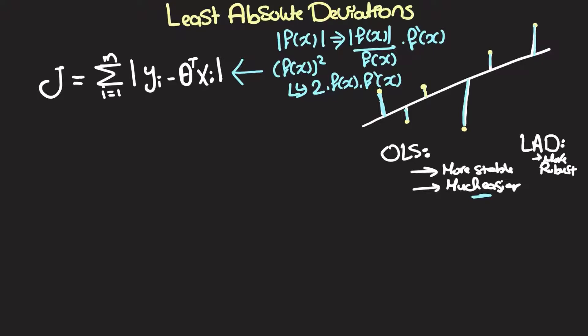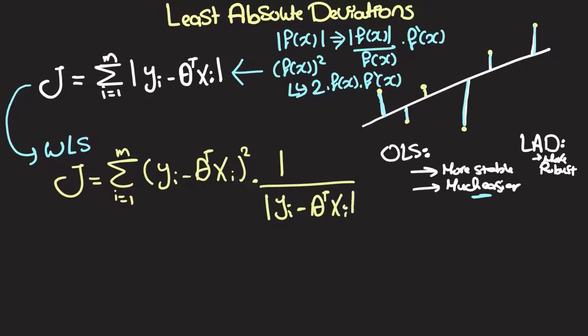So instead of following the traditional approach, we're going to try to write this down in terms of weighted least squares. We can write this as j equals the sum from i equals 1 to the length of our data set of yi minus theta transpose xi squared multiplied by our weight, which in this case should be 1 over the absolute of yi minus theta transpose xi. This should be equivalent because x squared over absolute x is equal to the absolute of x.